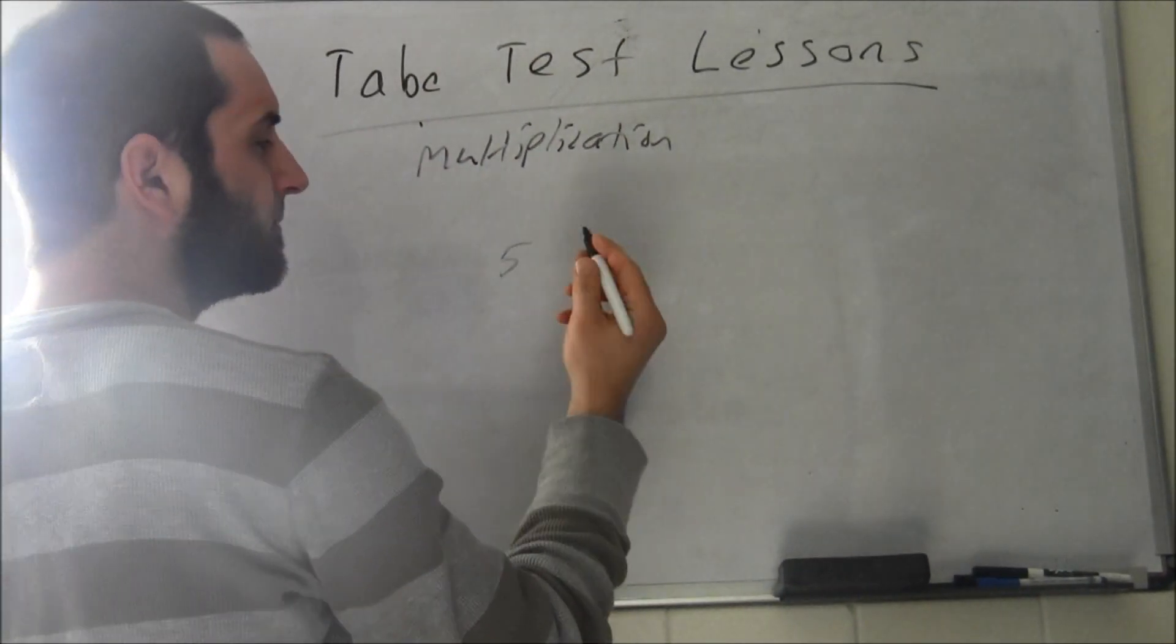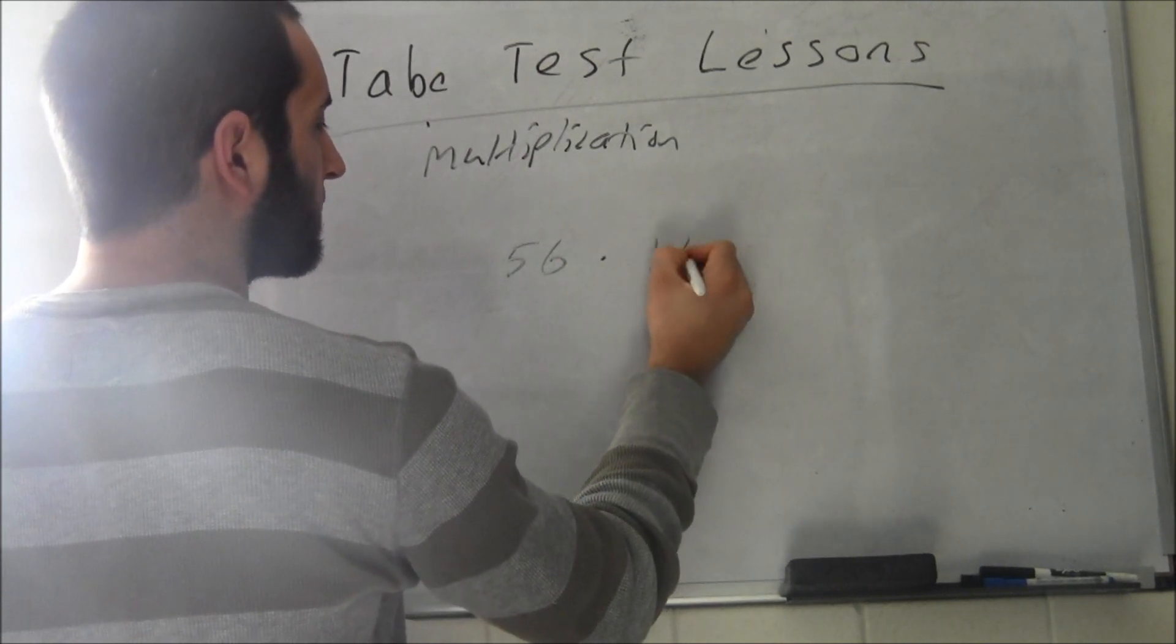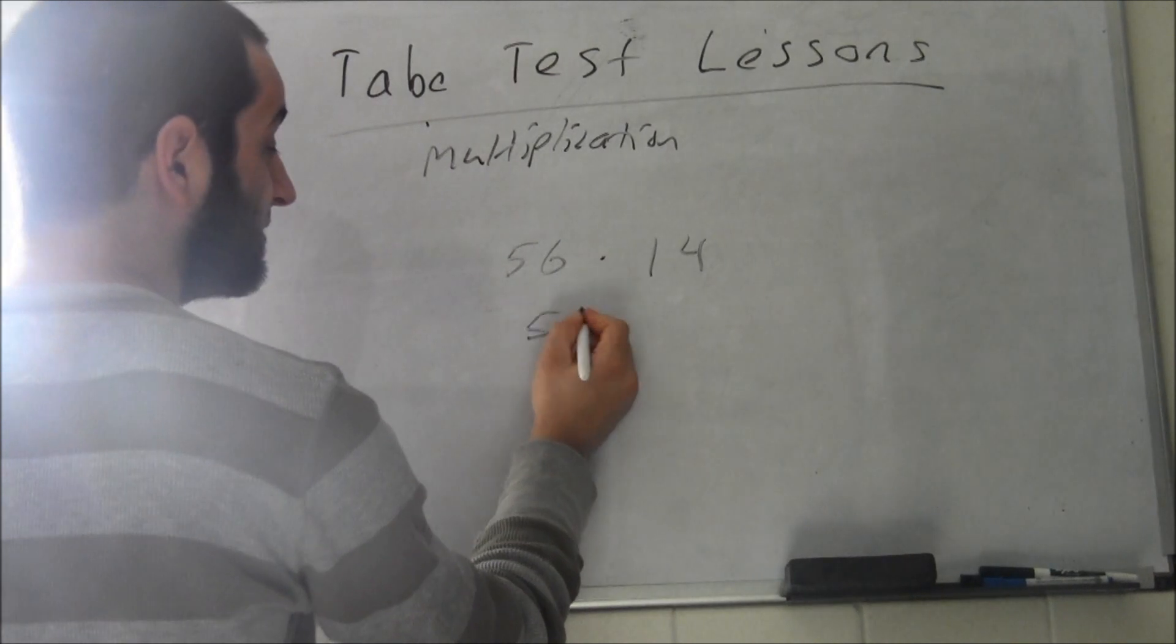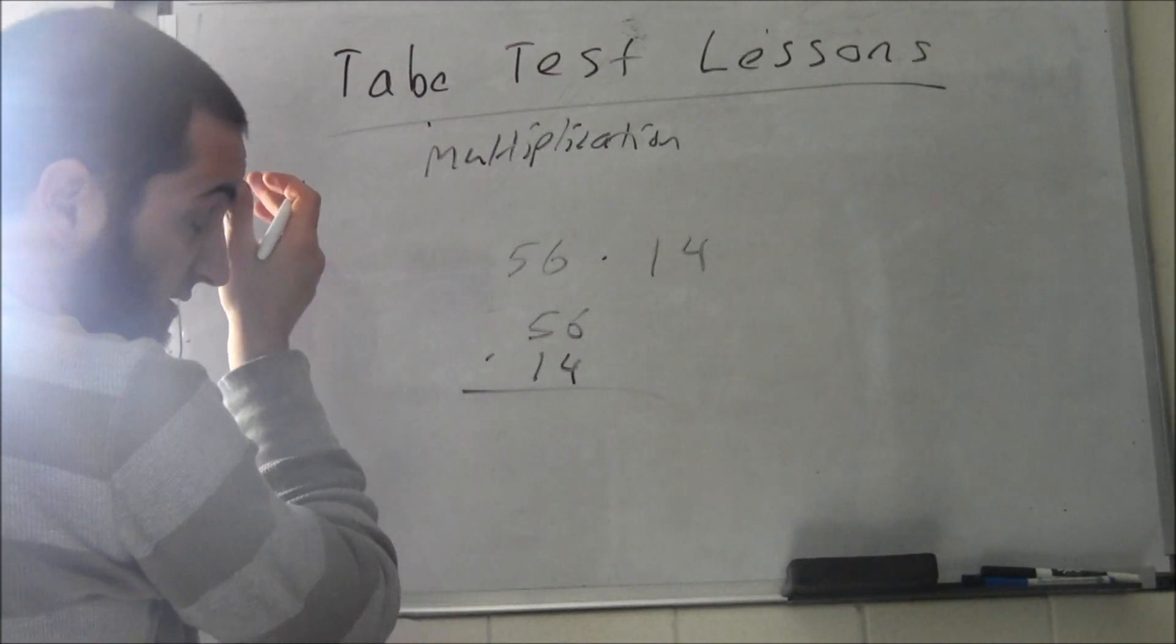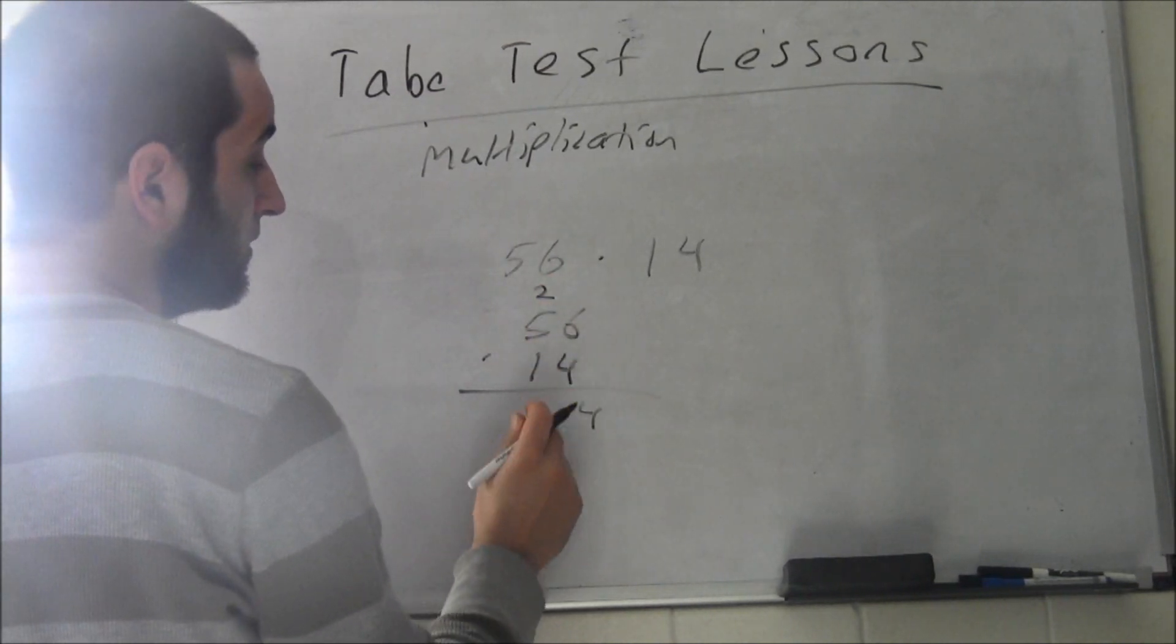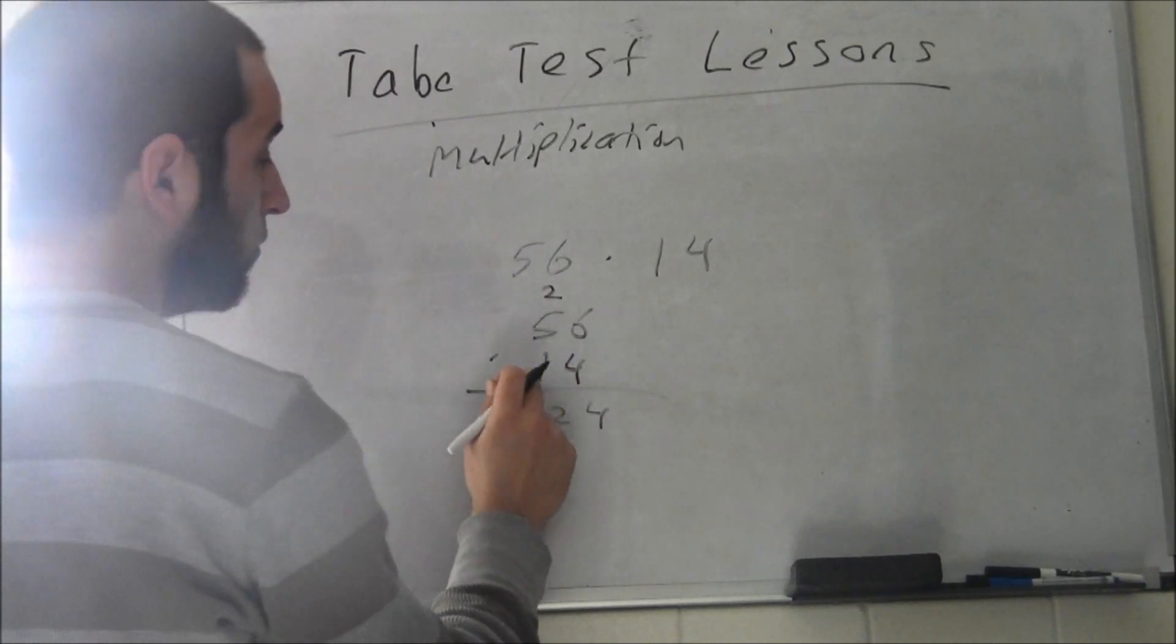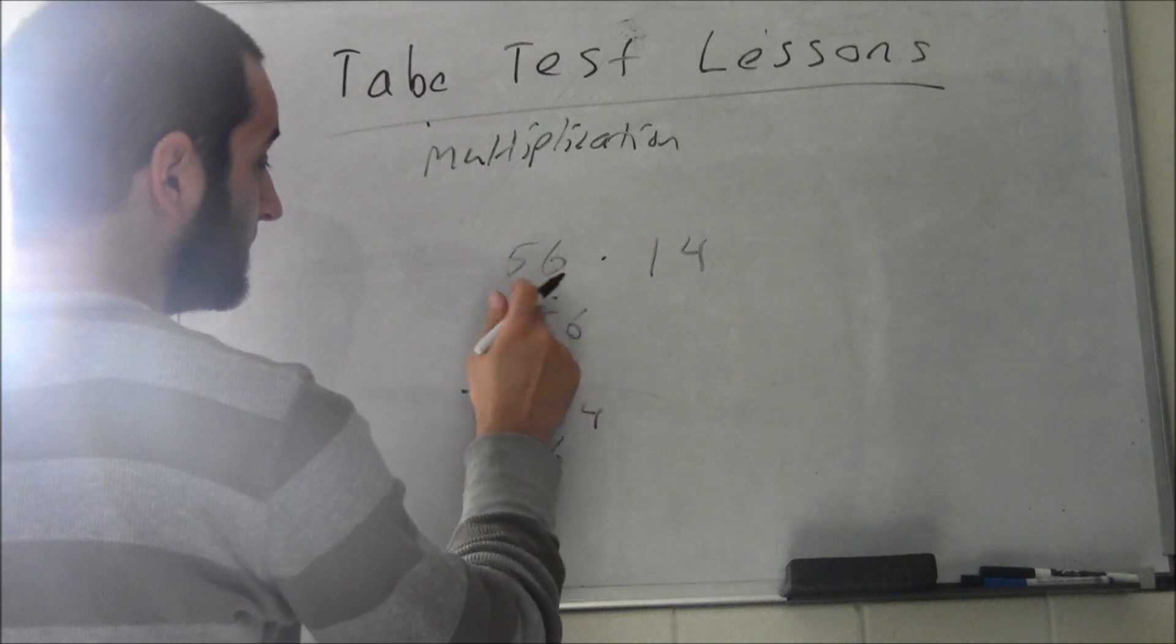Let's do another number, a big number: 56 times 14. I like to write it up and down, so 56 times 14. Multiplying: 6 times 4 is 24, carry the 2. 4 times 5 is 20 plus 2 is 22. 1 times 6 is 6, 1 times 5 is 5.